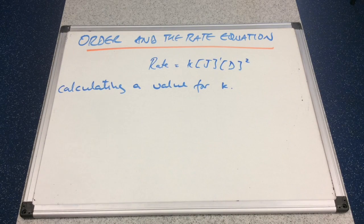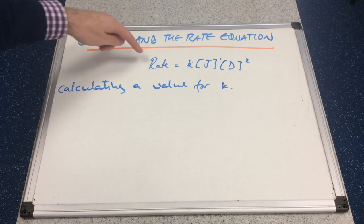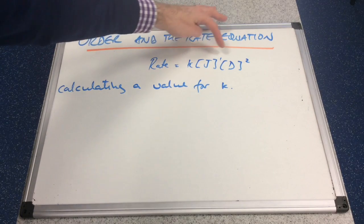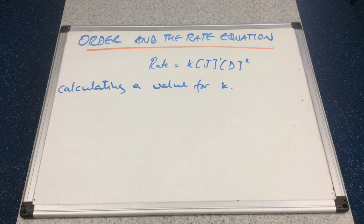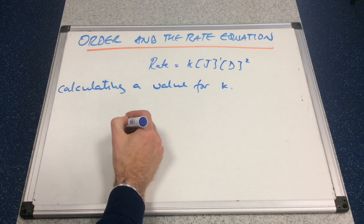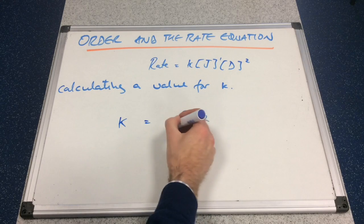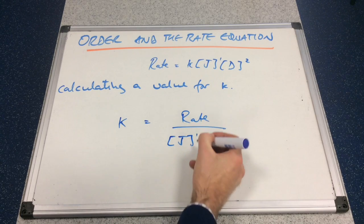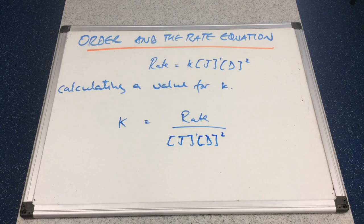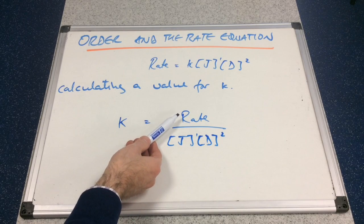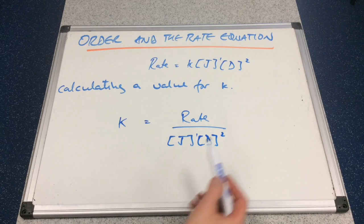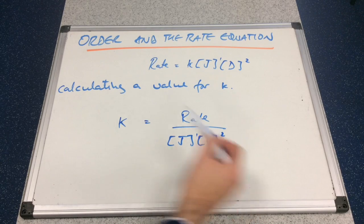Once you know the rate equation, you can calculate a value for K, provided you know the rate and the concentrations of the reactants. To calculate K, rearrange the equation to make K the subject: K equals rate divided by concentration of J to the power 1 times concentration of D to the power 2. Substitute in your values, not forgetting to square the concentration of D.